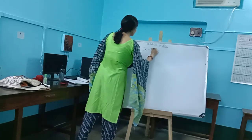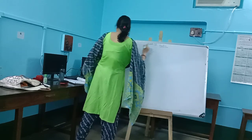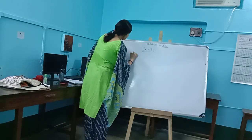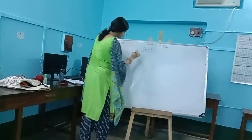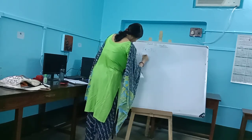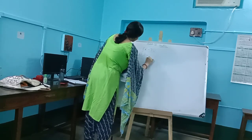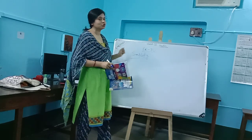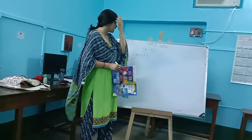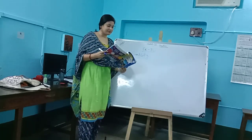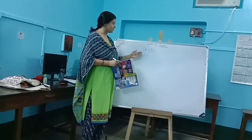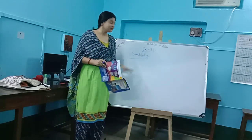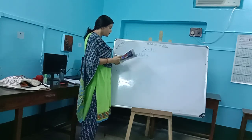Now we come to Exercise 3D, which has simplify problems. Do you know what the meaning of simplify is? Simplify means here in your exercise you have both addition and subtraction. Addition you did in the previous class and the previous chapter. And in this chapter, Chapter 3, you have subtraction. So simplify involves both addition and subtraction.